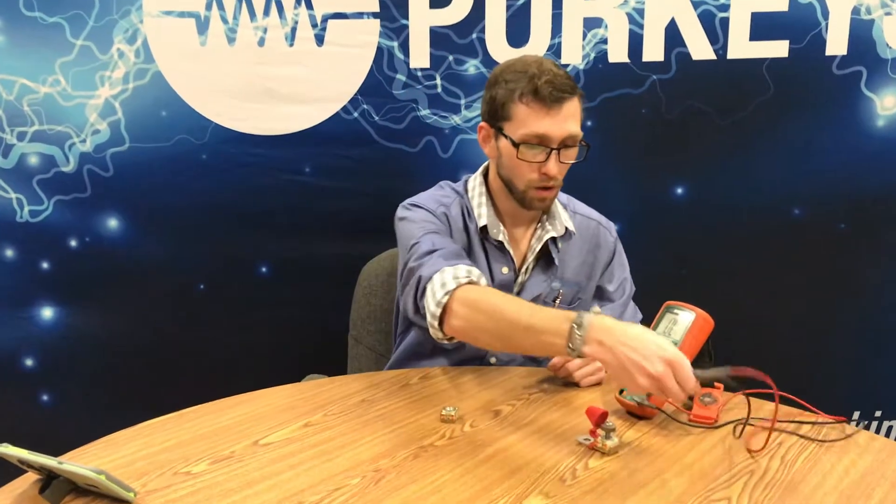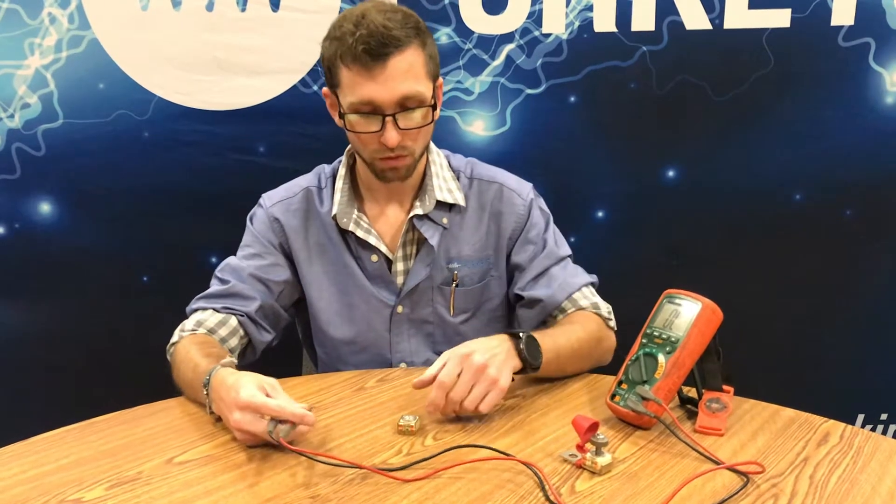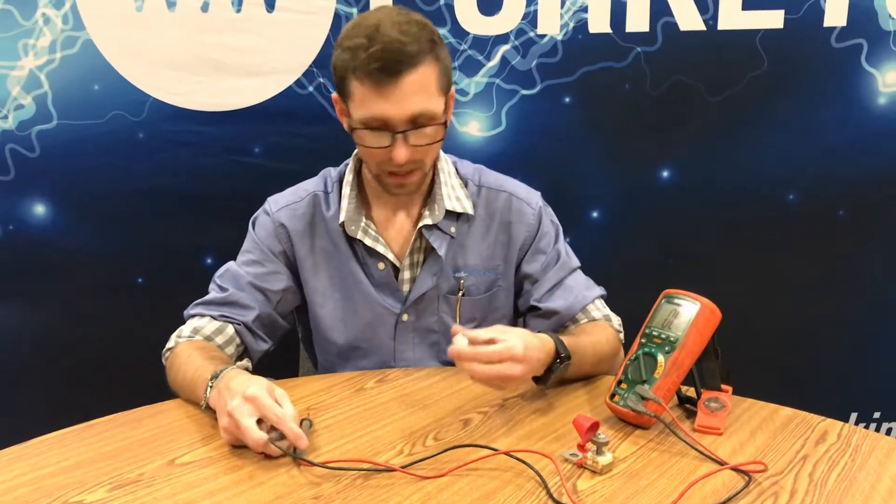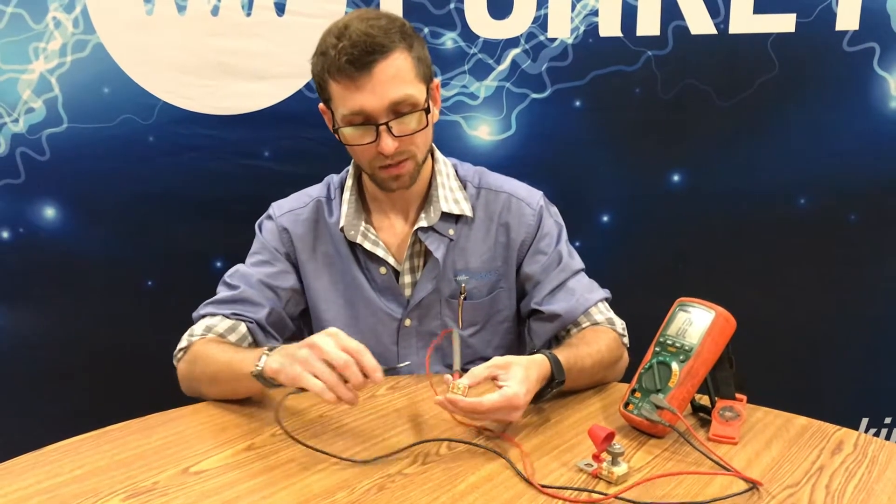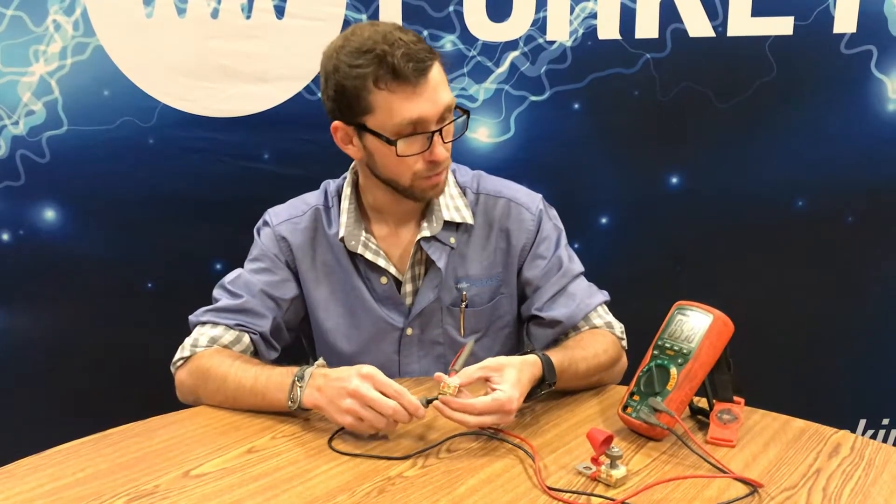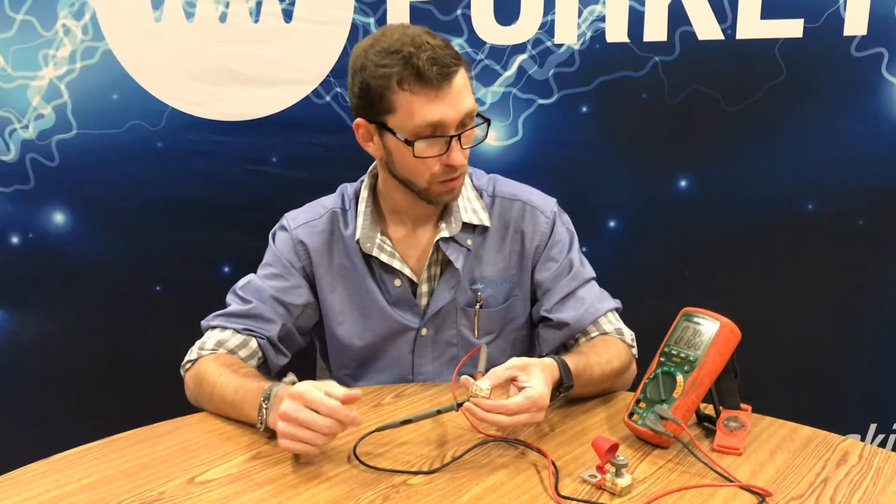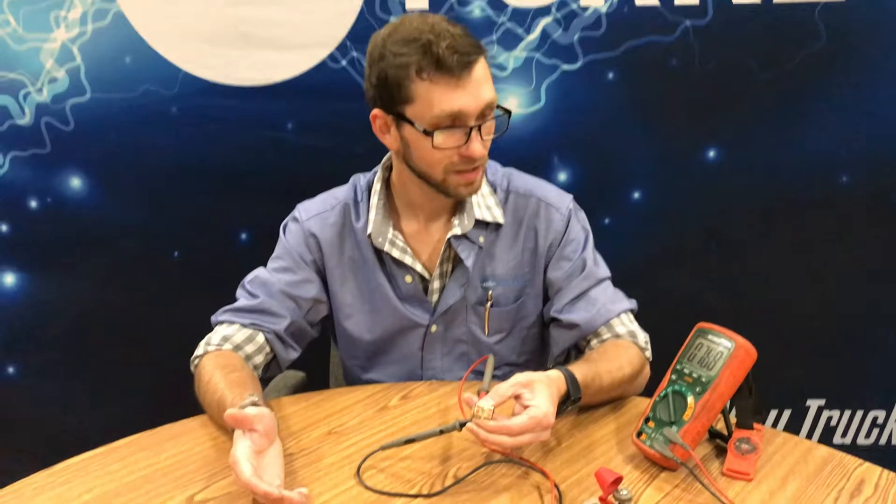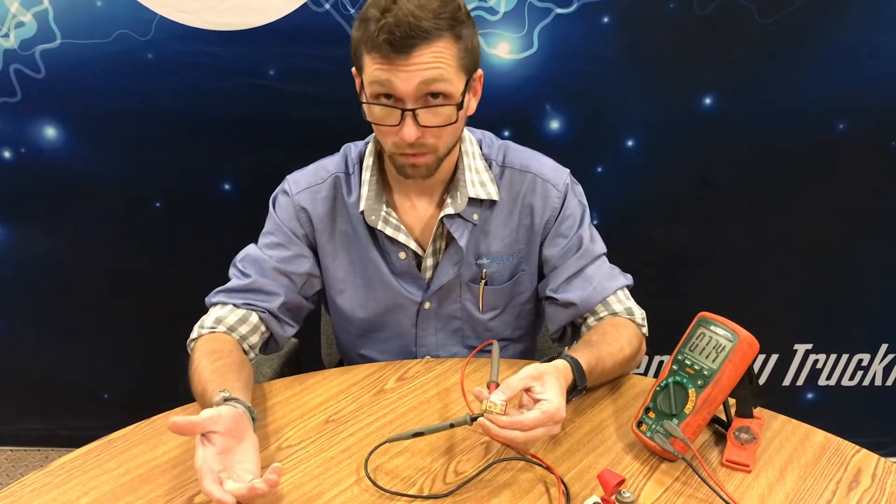We'll start with a bad fuse cube. We'll go from the top with our positive lead and then to the bottom. You'll notice how the ohms reading is not consistent. This is telling you that it is blown.